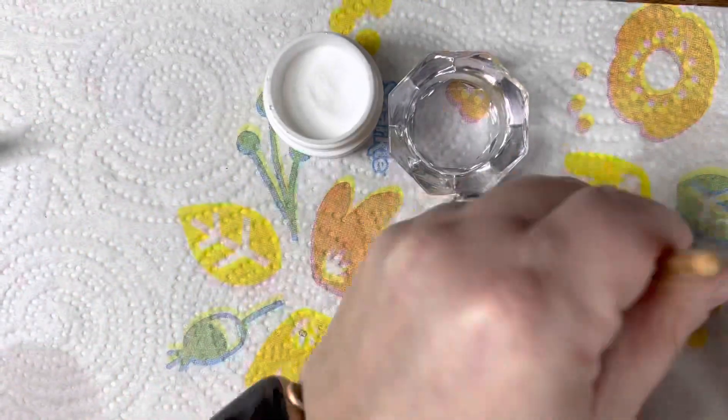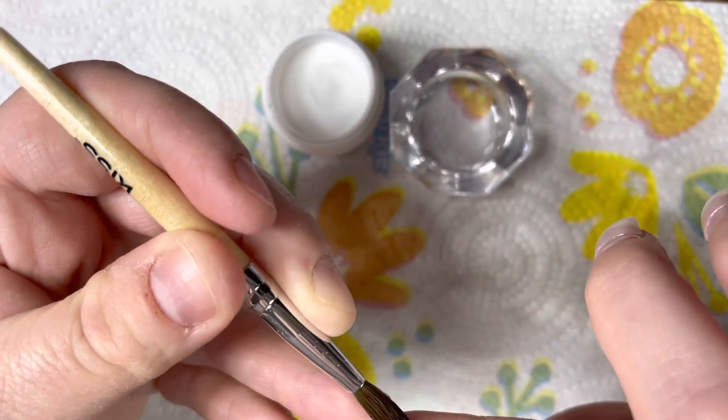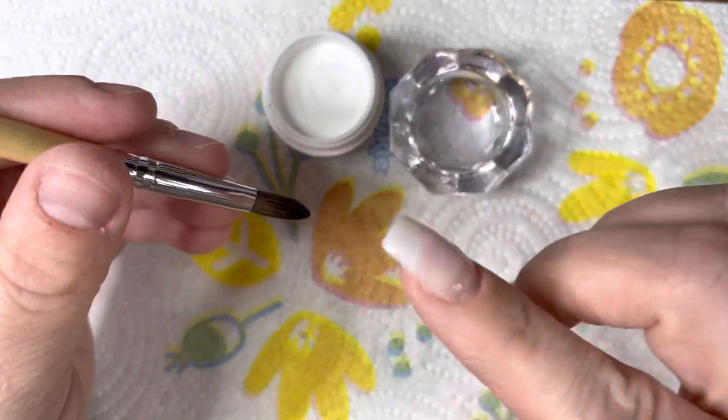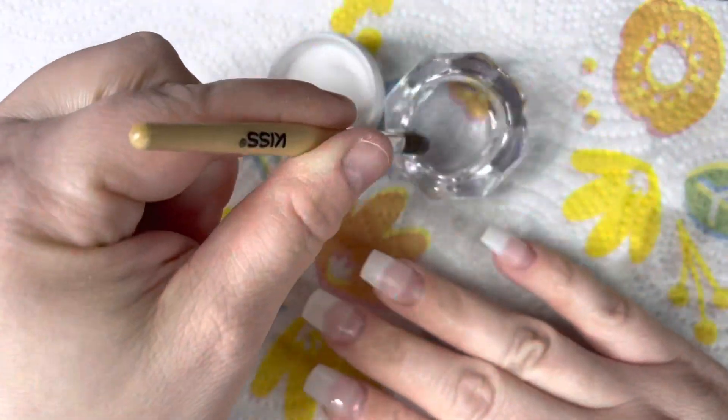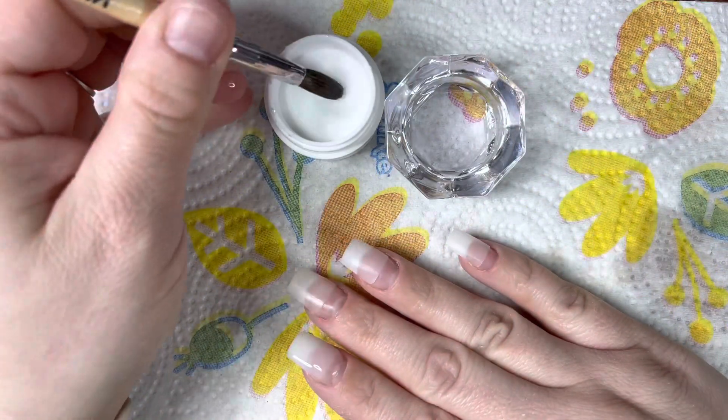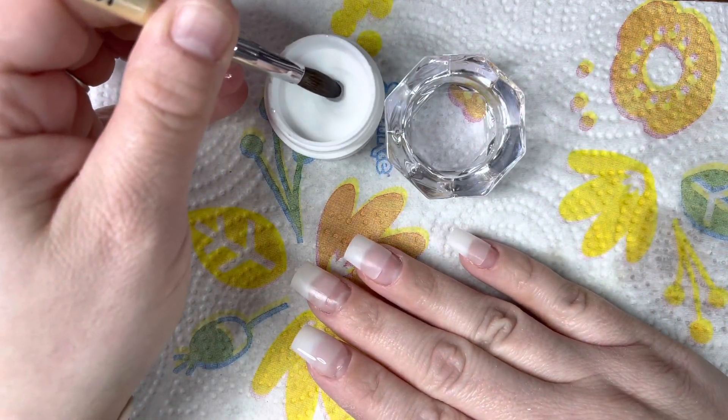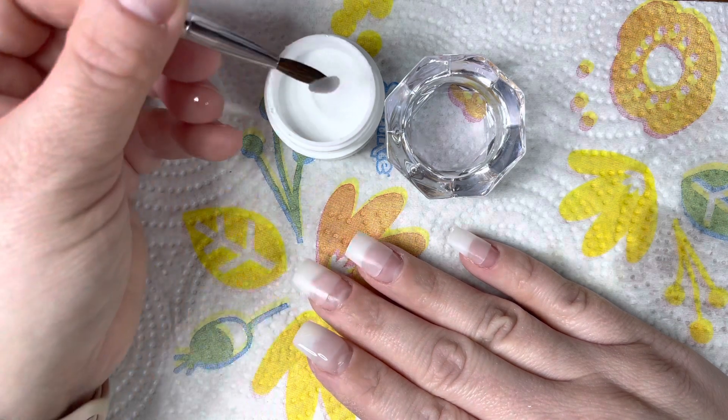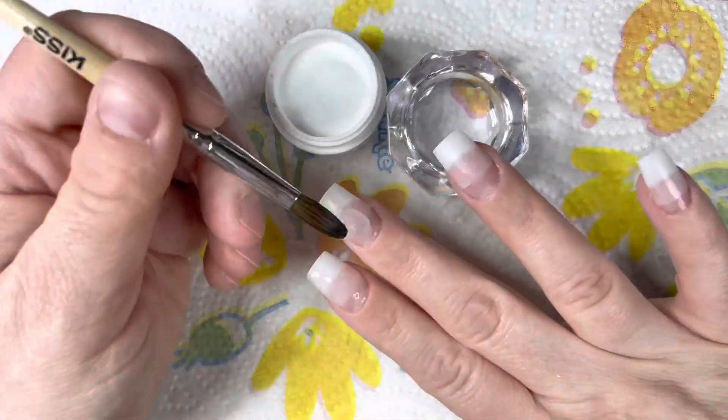This monomer leaves a sticky tacky layer that needs to be filed off. Isopropyl alcohol does not work to take off the tacky layer like it would with polygel or gel polish.